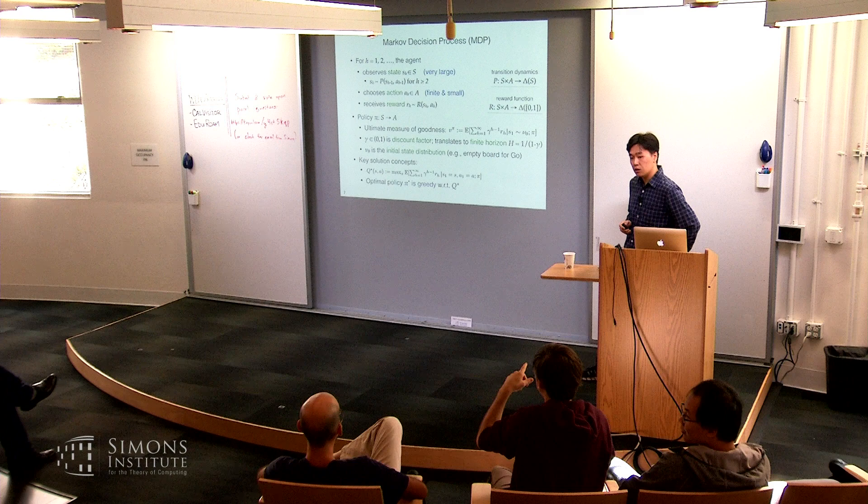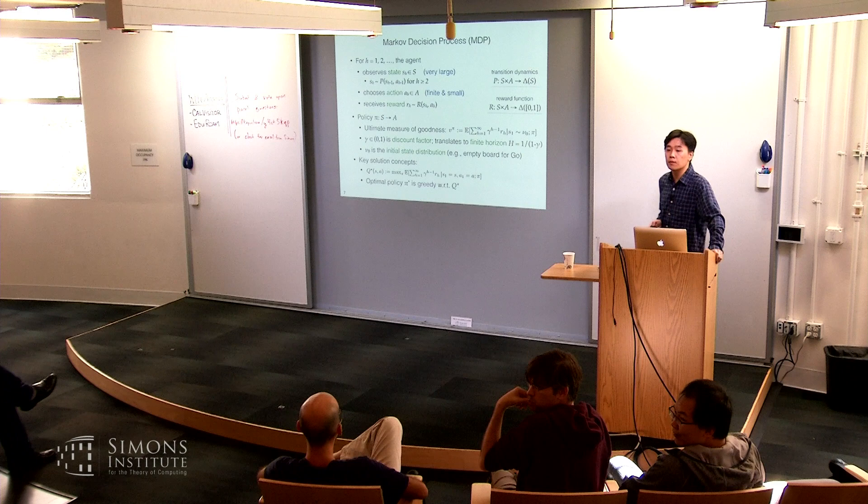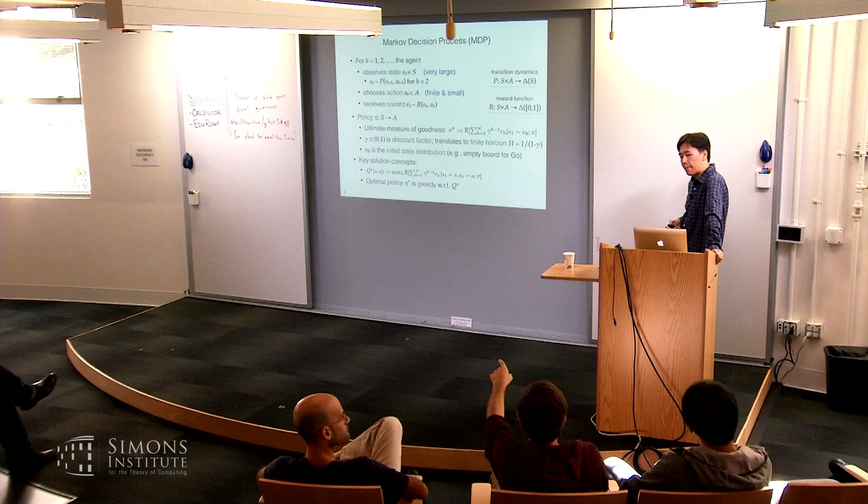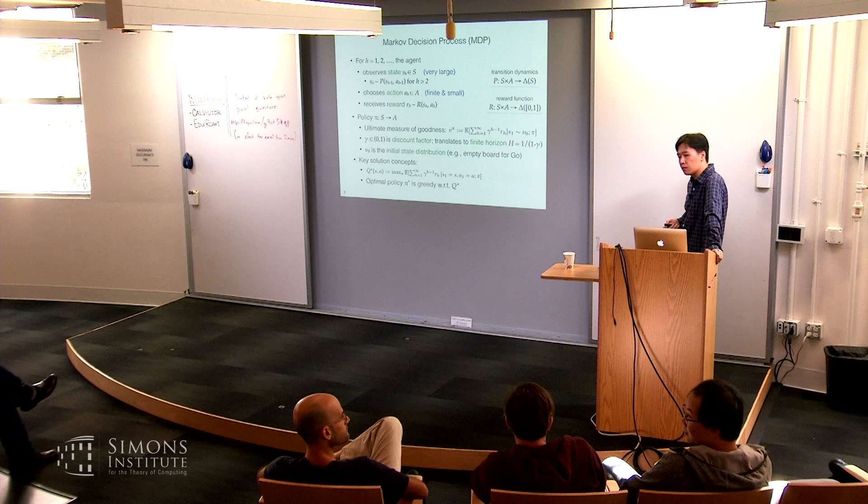An audience member asked about the connection to submodular functions because of the max operator in the Bellman equation. The response was that they both have a max, but because of the state space and policy structure, it's quite different. Submodular maximization is much easier because you're looking for a single point, whereas here you have multi-step structure.